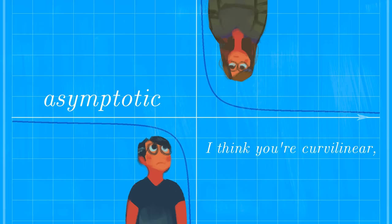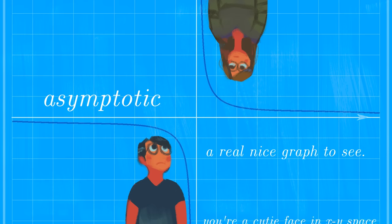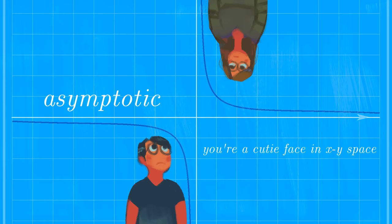I think you're curvilinear. You're a real nice graph to see. You're a cutie facing xy space, not imaginary. But it's complex. The limits are infinitely great. I wish that we could cosign, but that'll have to wait.